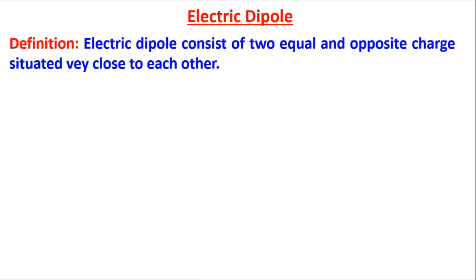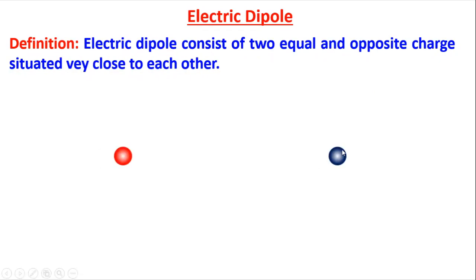The definition of an electric dipole: it consists of two equal and opposite charges situated very close to each other. 'Di' means two, so dipole means two poles. Let me show you with this animation — two equal and opposite charges, plus q and minus q, situated very close to each other.